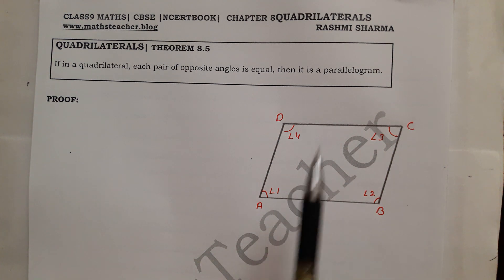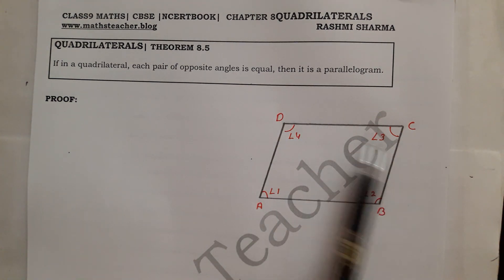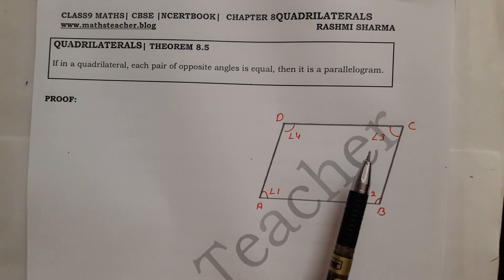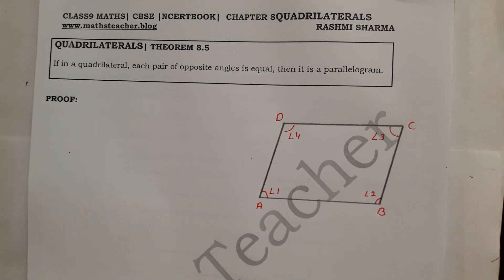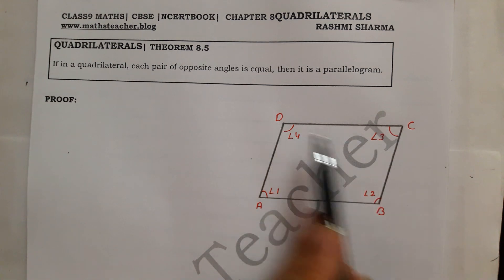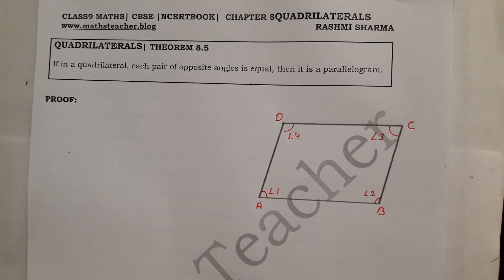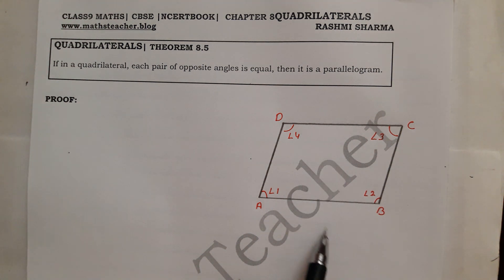Given this, we need to prove that quadrilateral ABCD is a parallelogram. To prove it is a parallelogram, we need to show AB is parallel to CD and AD is parallel to BC. To prove a quadrilateral is a parallelogram, we must prove that the opposite sides are parallel.